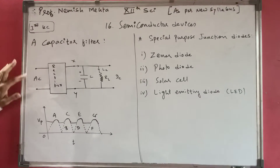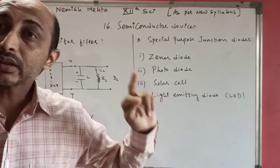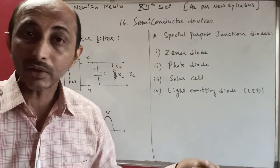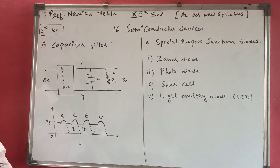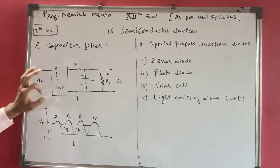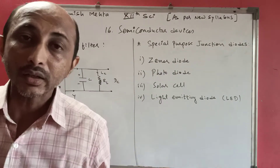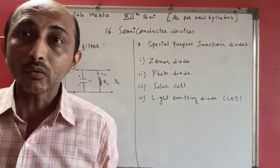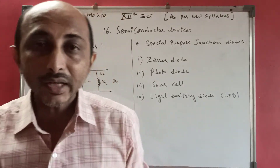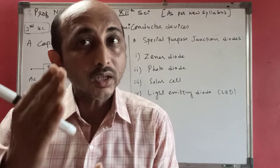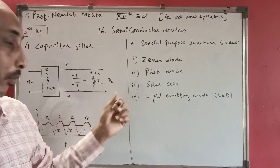Now let us see how this capacitor works in detail. When AC supply goes into the rectifier, the rectifier converts AC to DC. That DC still has some AC component causing fluctuations. When this goes into the capacitor, the capacitor first charges itself. Once charged, it pushes the current forward to the load resistance, giving output.